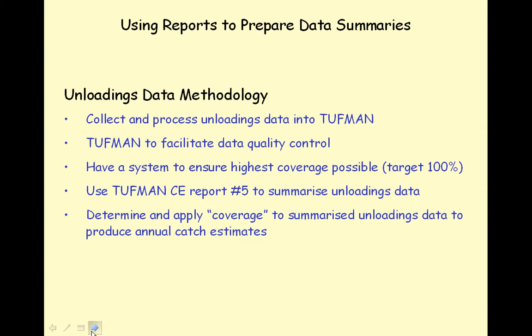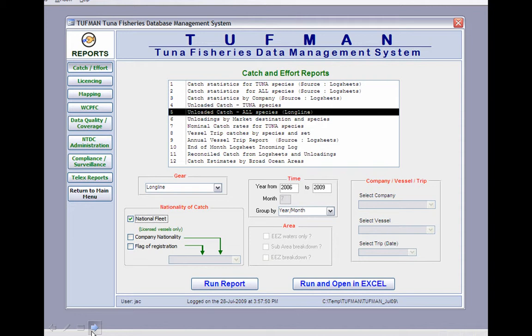Collect and process unloadings data into Toughman and use the Toughman Trip Coverage Module to estimate trip coverage. Then run the post data entry processes to facilitate data quality control and to improve the estimated trip coverage. For unloadings data, use Toughman Catch and Effort Report Number 5 to extract the total catch for the national fleet for the year of interest. Finally, determine and apply coverage to summarised unloadings data to produce annual catch estimates.